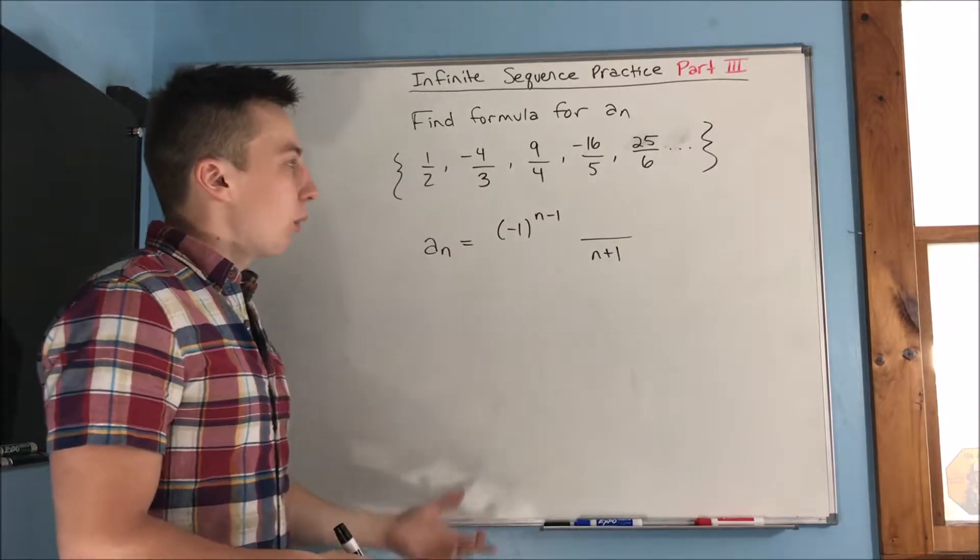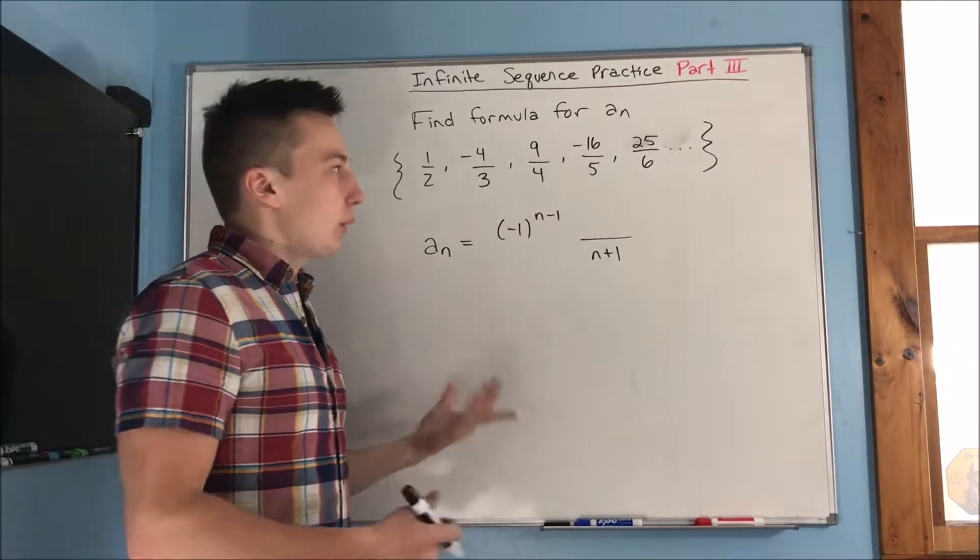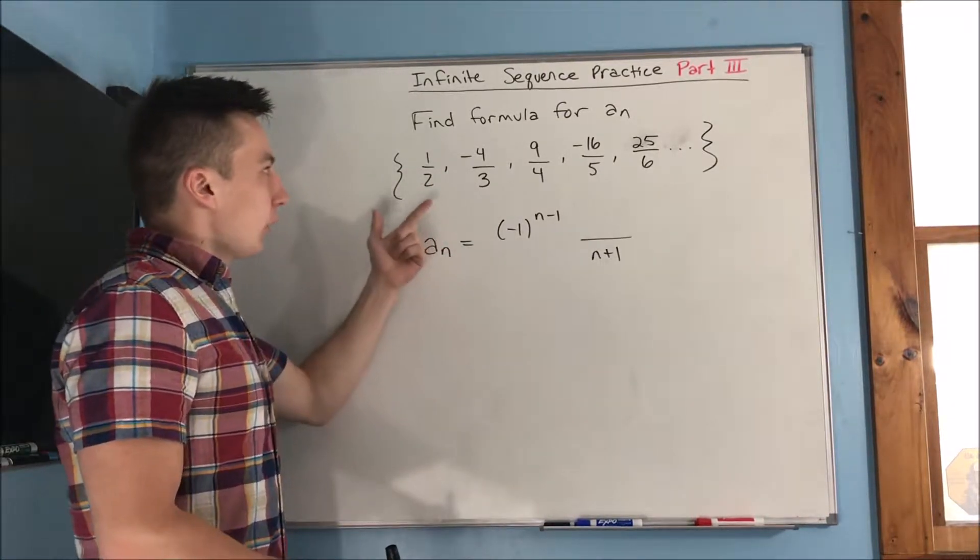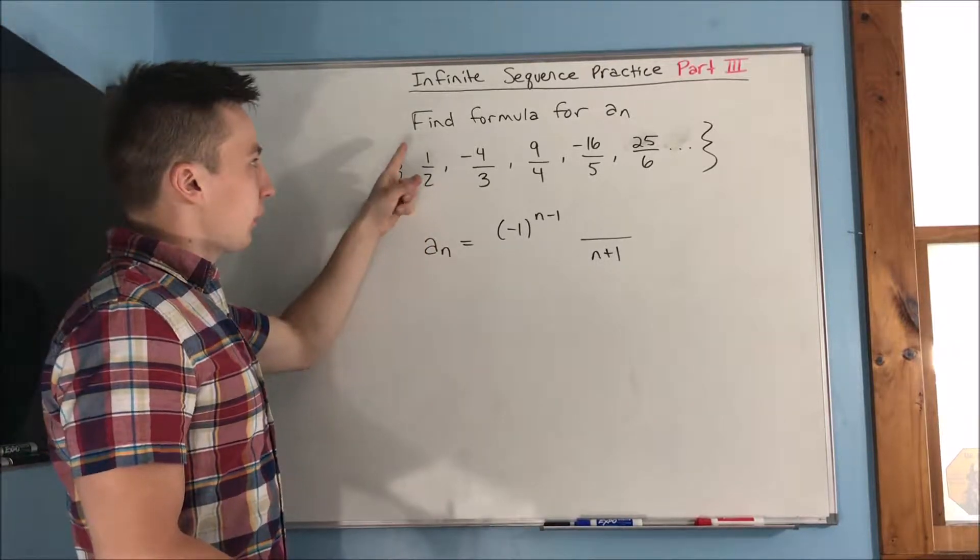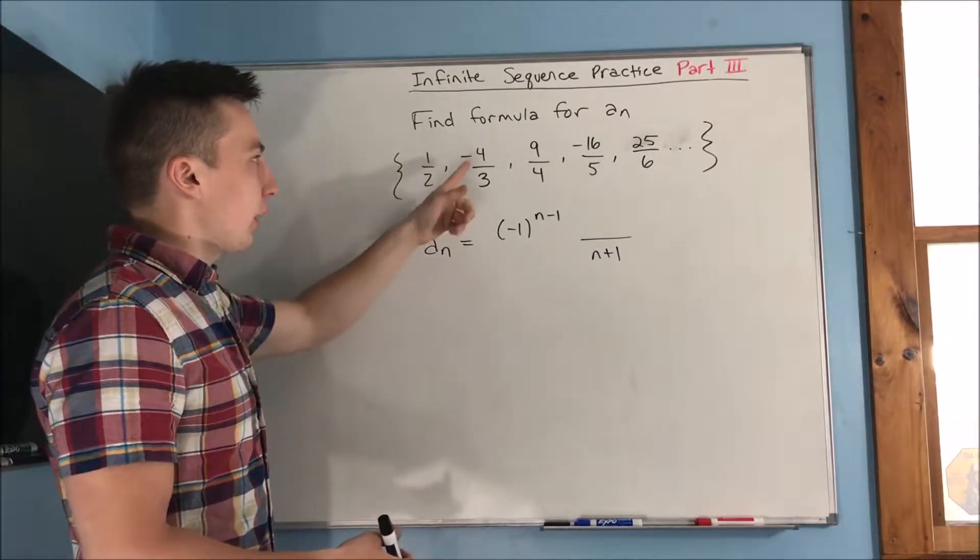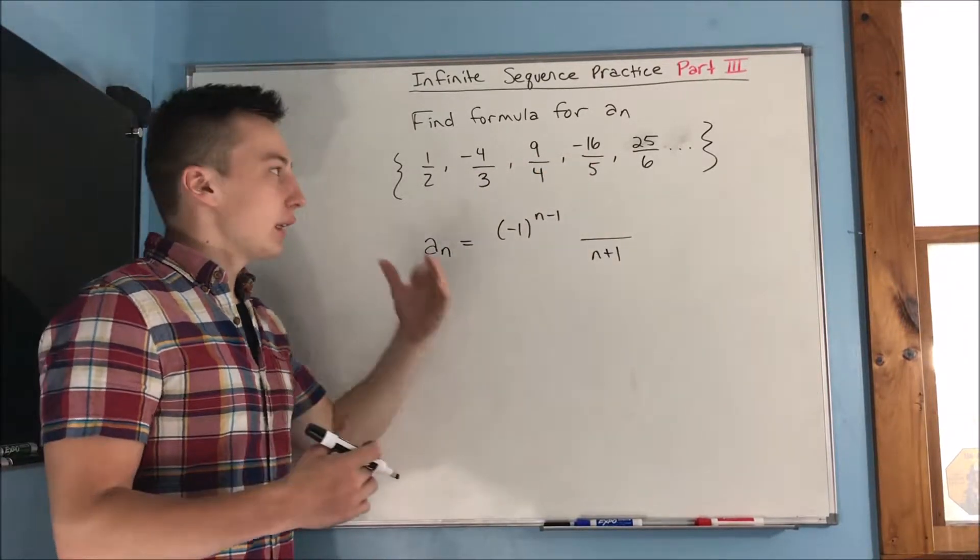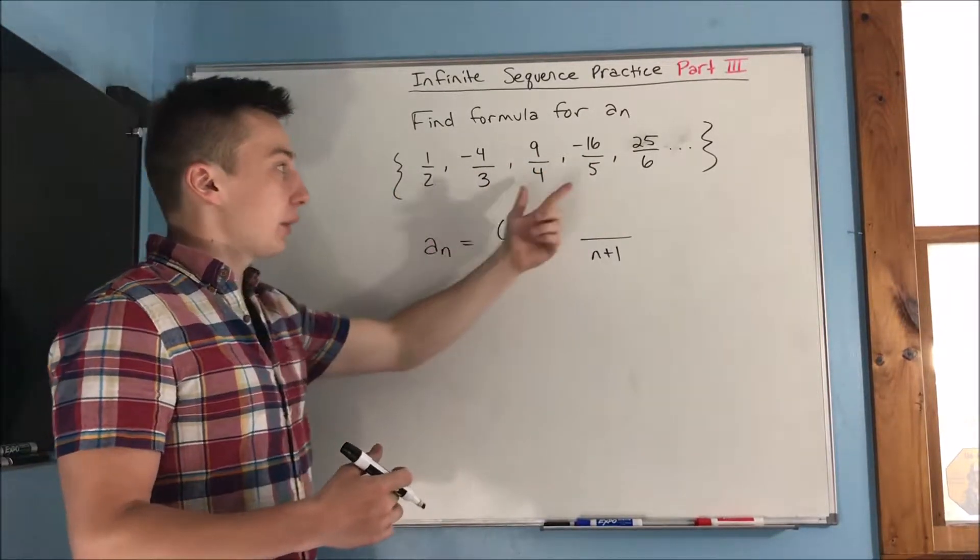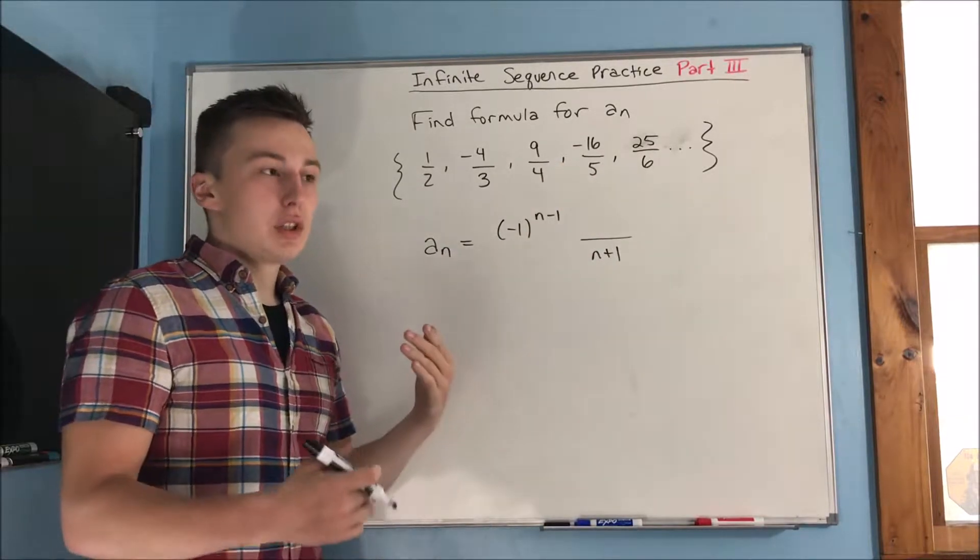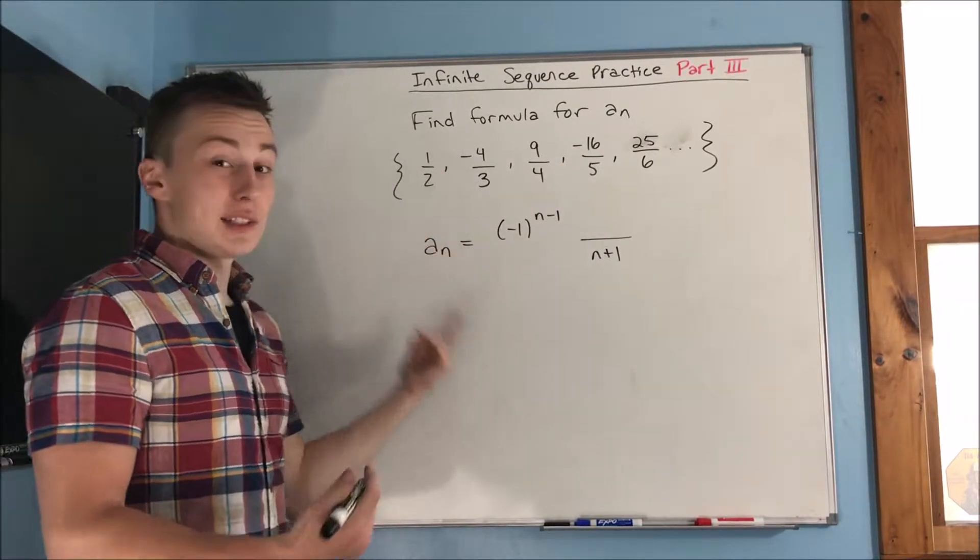But this top, what's that going to be? You can see that you can draw the connection that this is one squared, two squared, three squared, four squared, five squared, and this is our first term, second term, third term, fourth term, fifth term. So this is actually just going to be n squared.